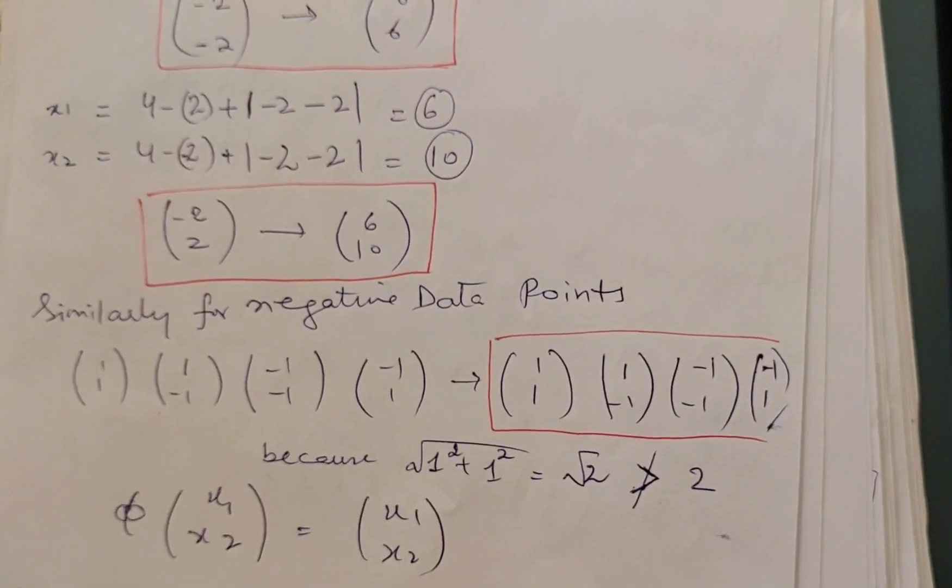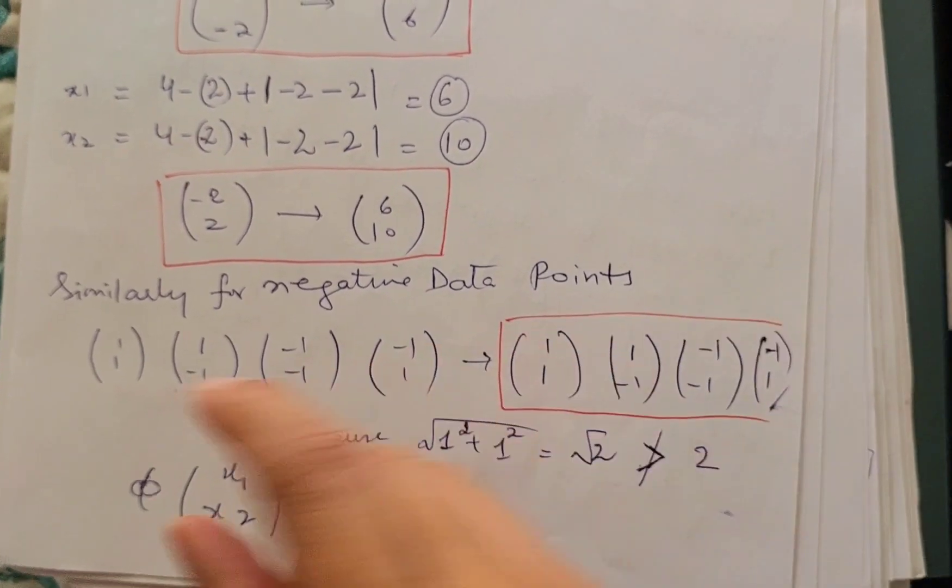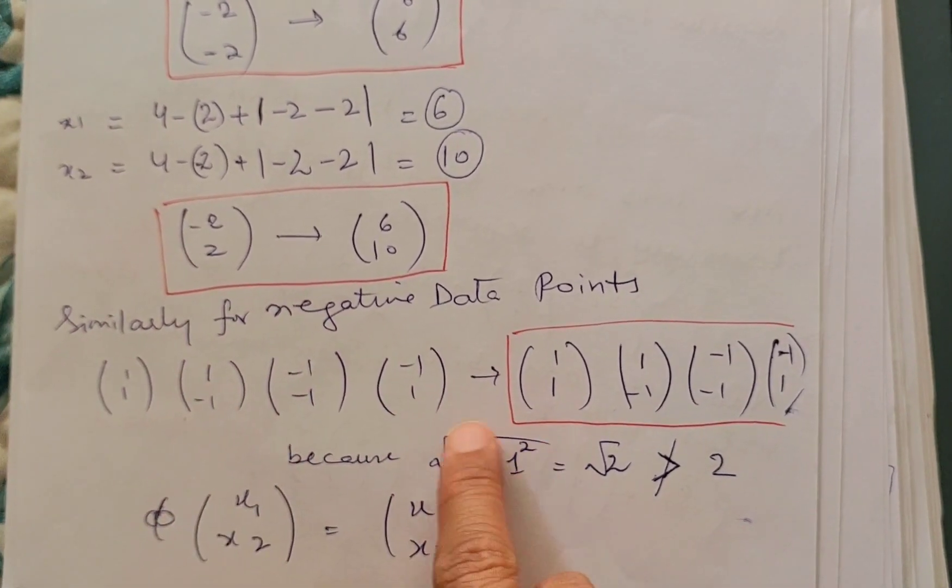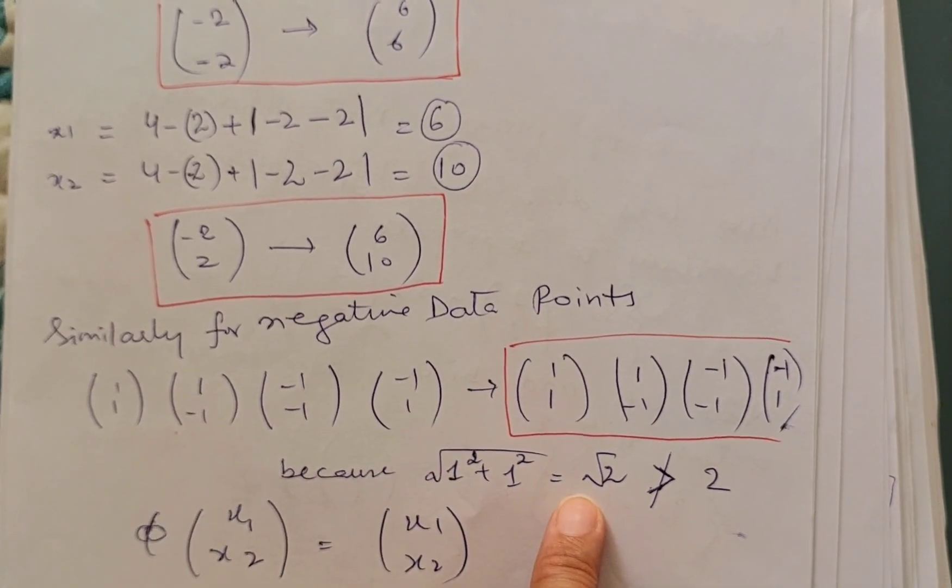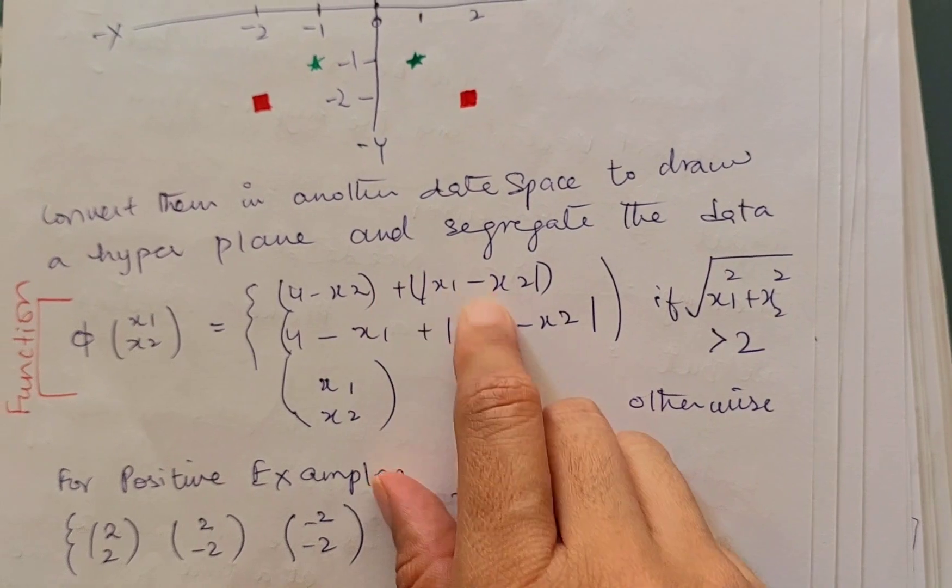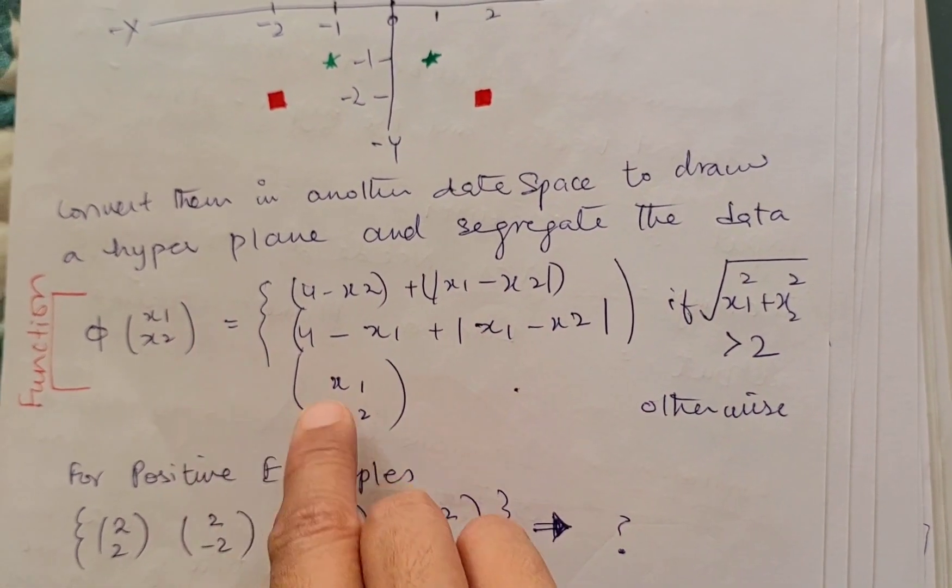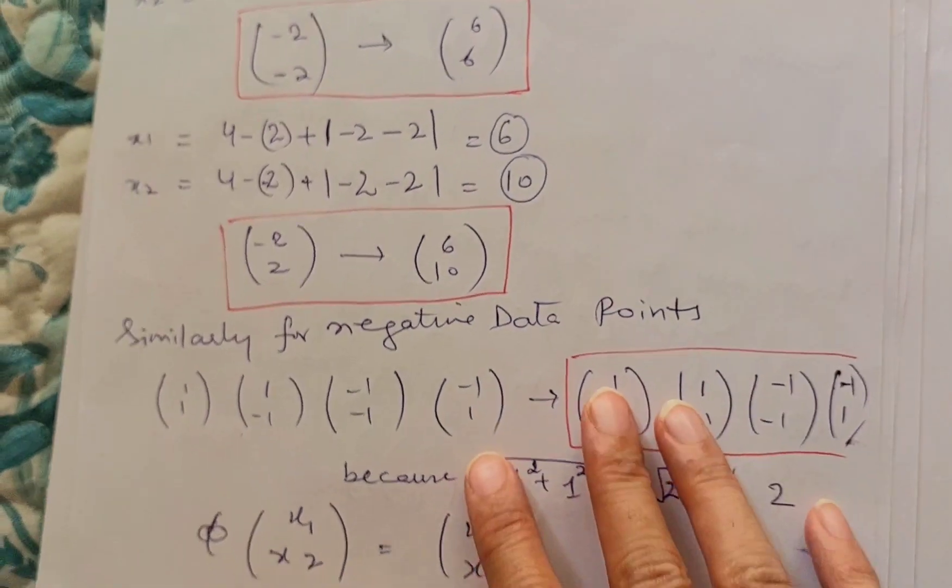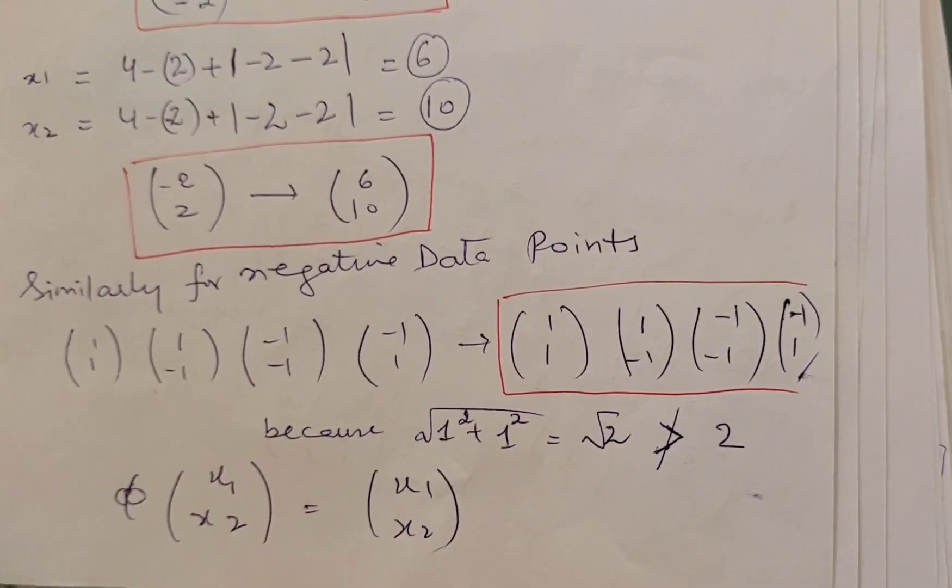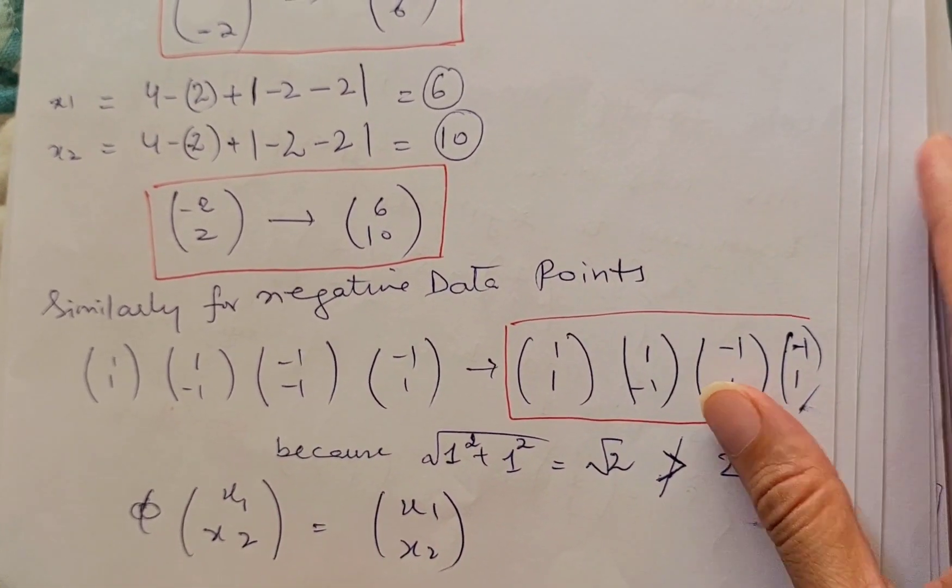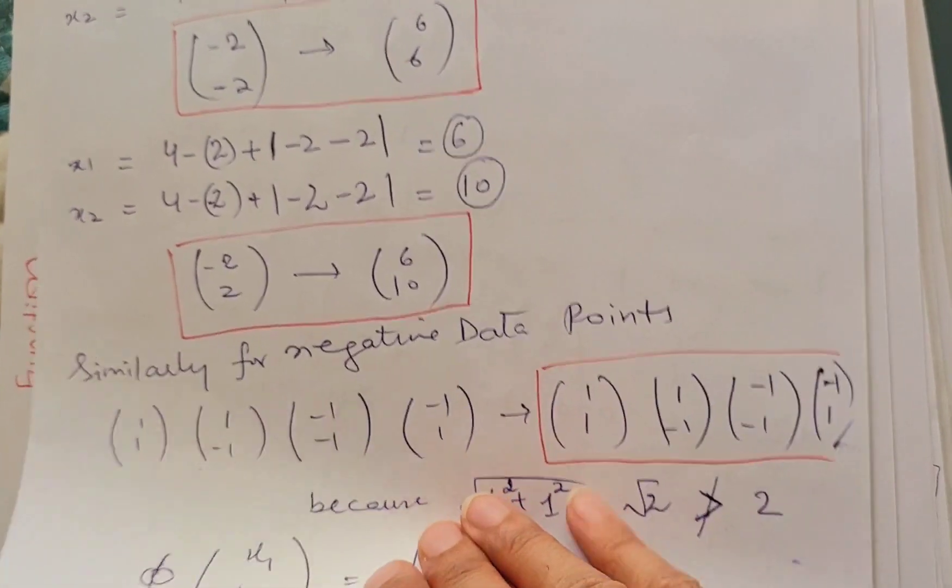Now coming on to the negative data points, you can see that if I take squares and sum of any of these data and under root them, this will never be larger than 2 as per the condition given to us in the function. So we will use this representation for the negative labeled class. This means the data points will stay the same as they were earlier.